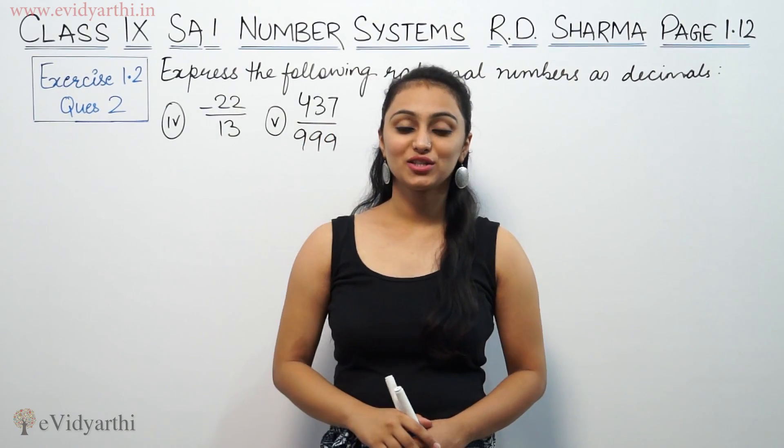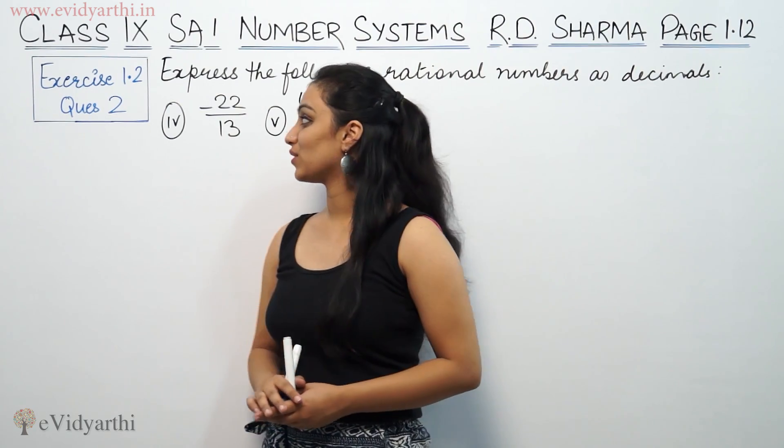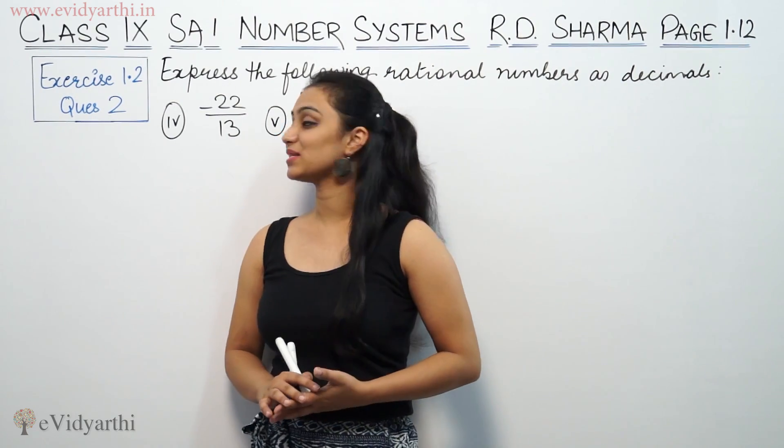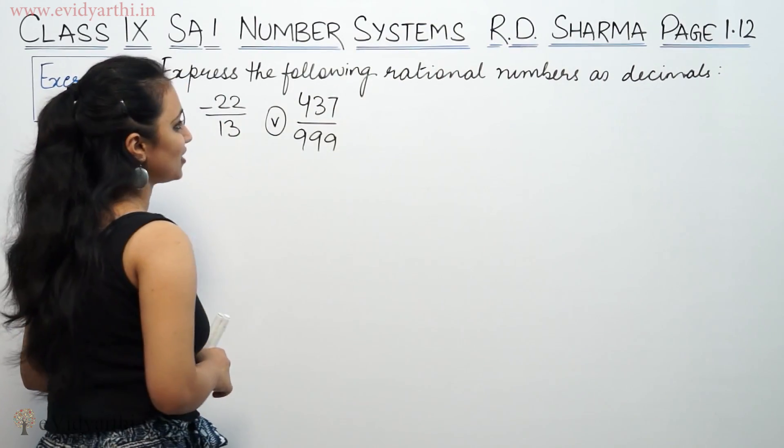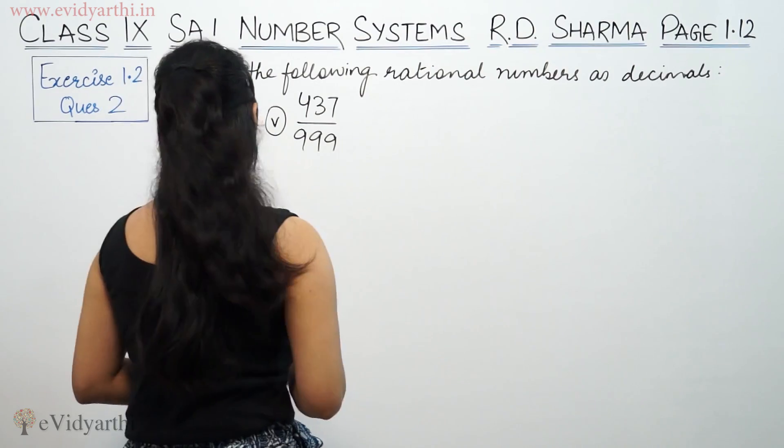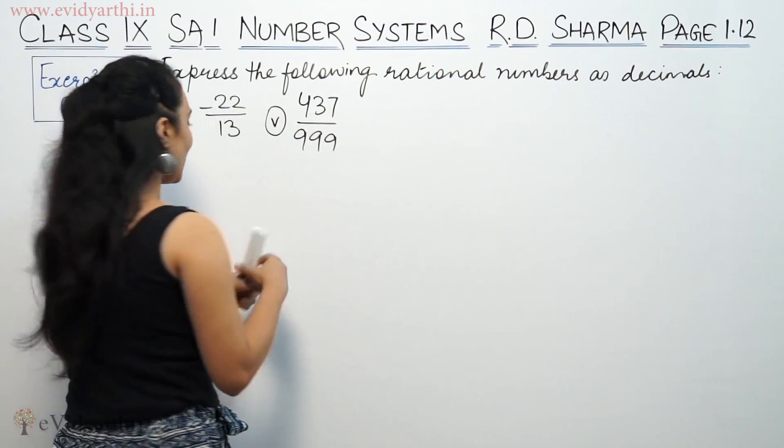Hi, this is Khushbu with another question on number systems. This will be done from Question number 2 from Exercise 1.2, page 1.12 from R.D. Sharma. The problem is to express the following rational numbers as decimals.